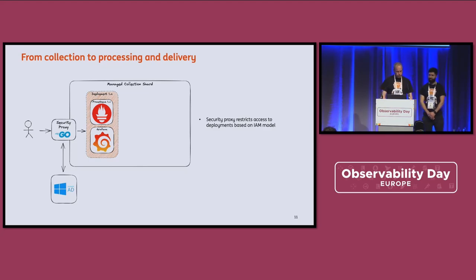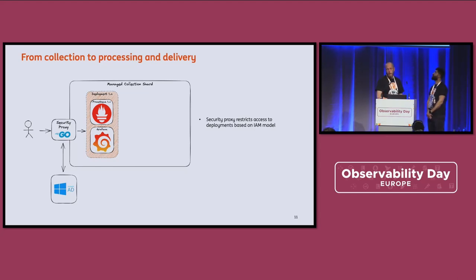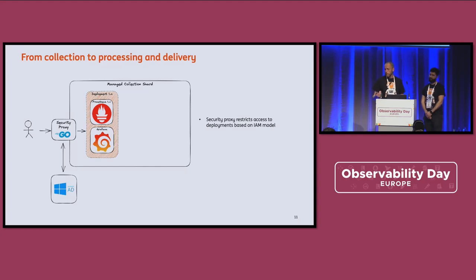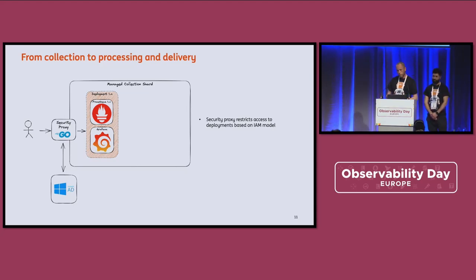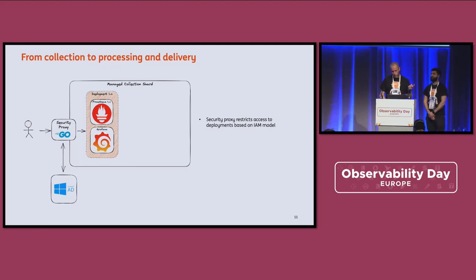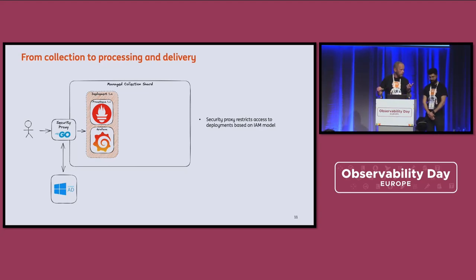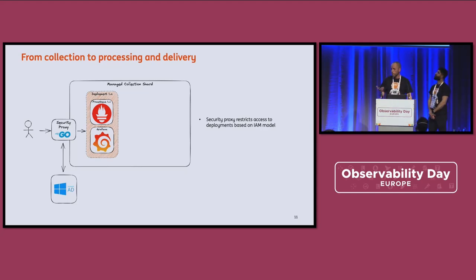Let's look at what resides in the shards. First, we have the security proxy, which is something we built in-house. It's a reverse proxy between the Prometheus interface and the Grafana interface. The proxy handles a couple of things: it presents consumers with the deployments they have access to, and it handles authentication — delegating to Active Directory via OpenID Connect. Based on the access token returned, we have group memberships, and each deployment is tagged with the groups that can access it. By intersecting those two pieces of information, we know what to present to our consumers.